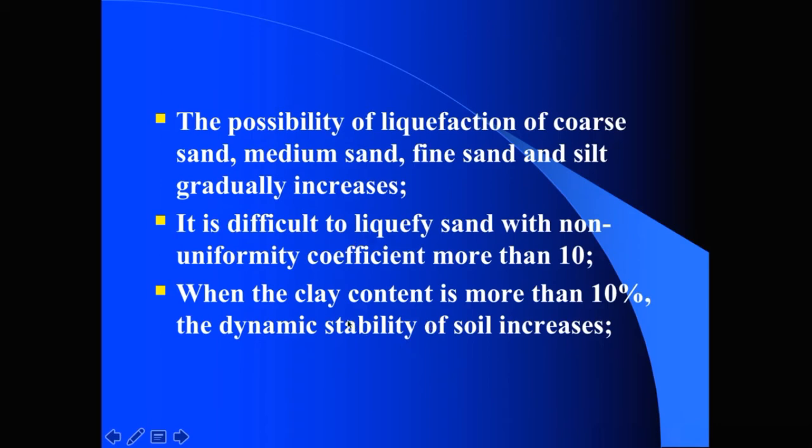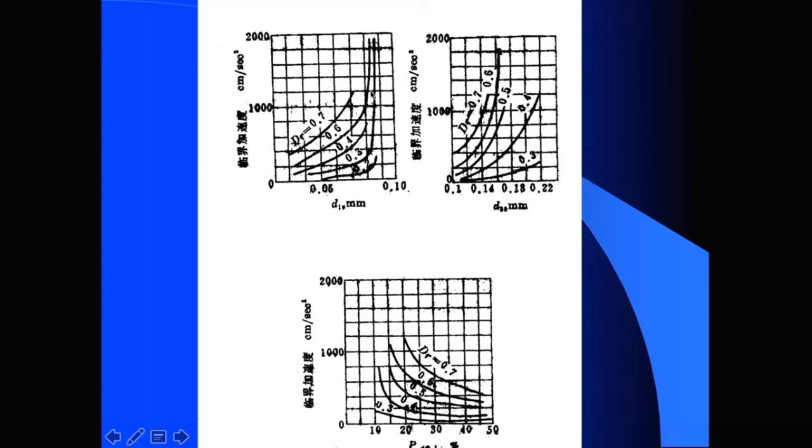Here we will talk about the fine contents. In this picture I can show you the effects of fine contents. The effective particle size is D10. We can find that if the fine contents increase, then it is more difficult to liquefy. The vertical axis is the acceleration required for liquefaction. We can find that increasing fine contents causes the liquefaction acceleration to increase.